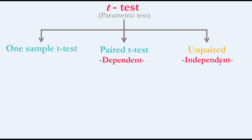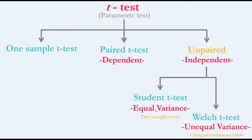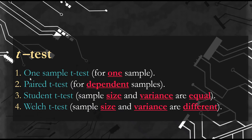For the independent t-test, there are two options: if your samples are equal in size and variance, you use the Student t-test, also known as the equal variance t-test or two-sample t-test. If your samples are unequal in size and variance, you use the Welch t-test, also called the unequal variance t-test. So we have four types in total: one sample t-test, paired t-test, Student t-test, and Welch t-test. In this video we will discuss the first two, and the next video will cover the other two.